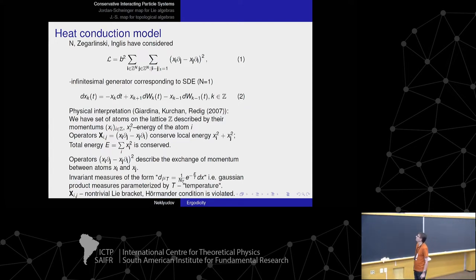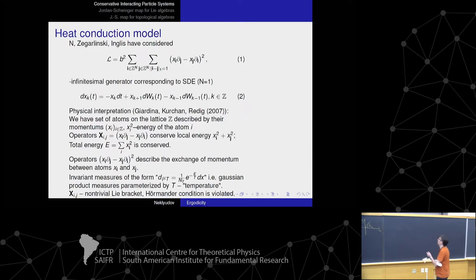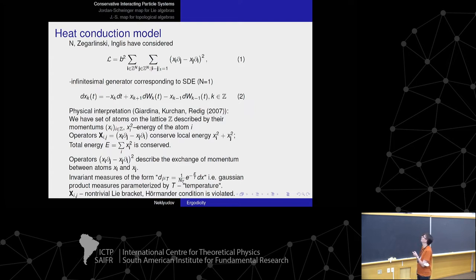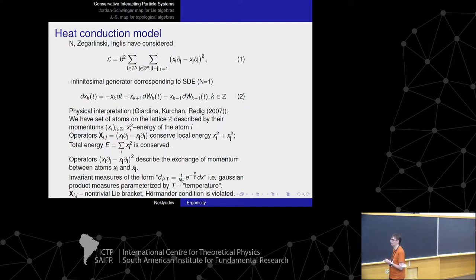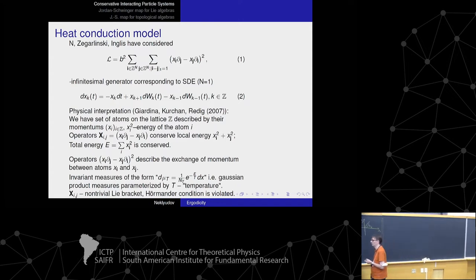The mathematical difficulty here lies in the fact that all operators are equal to zero at one point — the point zero. If x_I equals zero for all I, then all generators are zero, so they degenerate at that point. The classical conditions like the Hörmander condition are not satisfied, so we cannot use standard methods to study ergodicity of such a system.